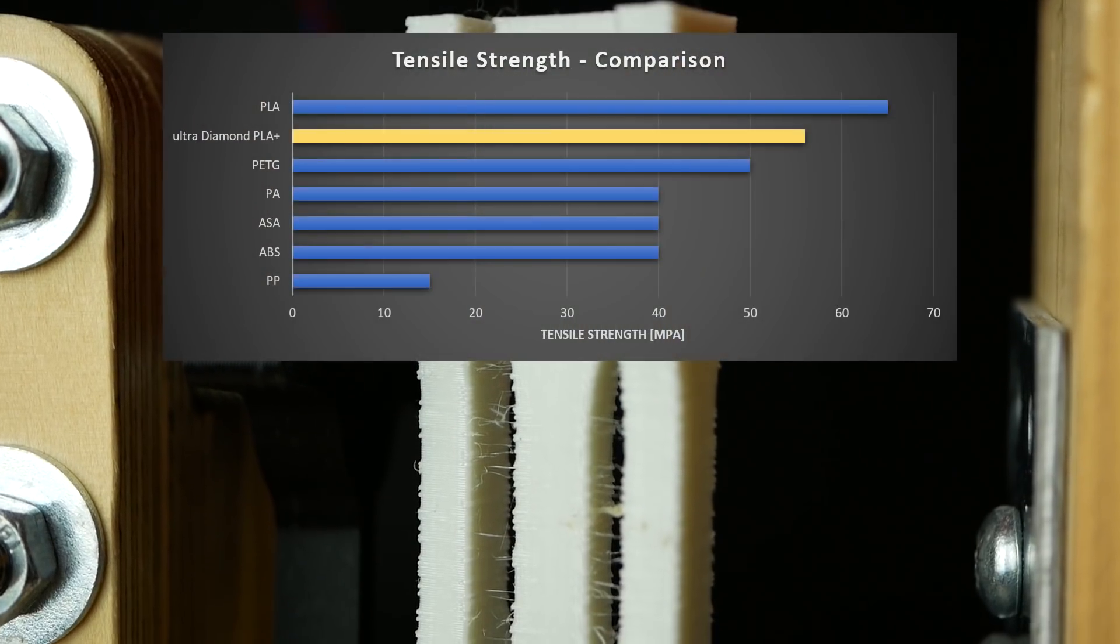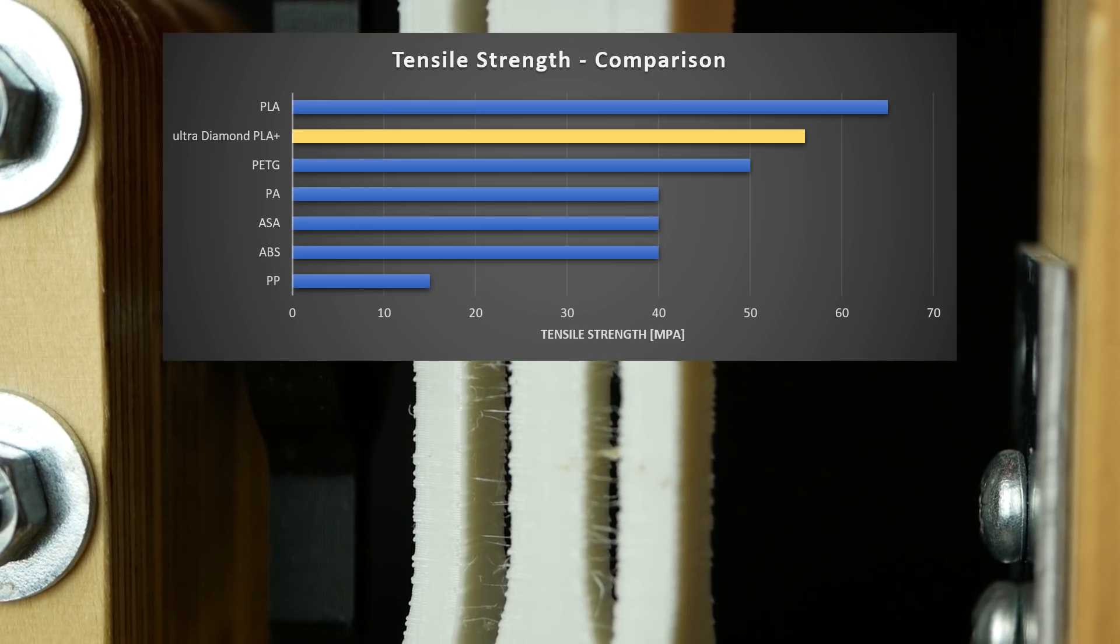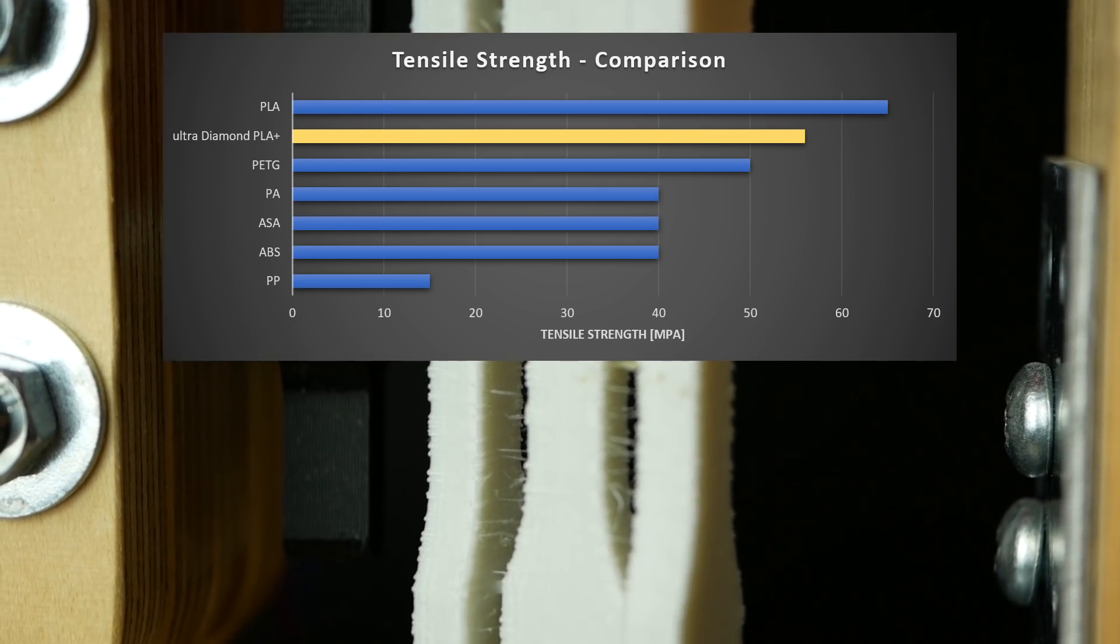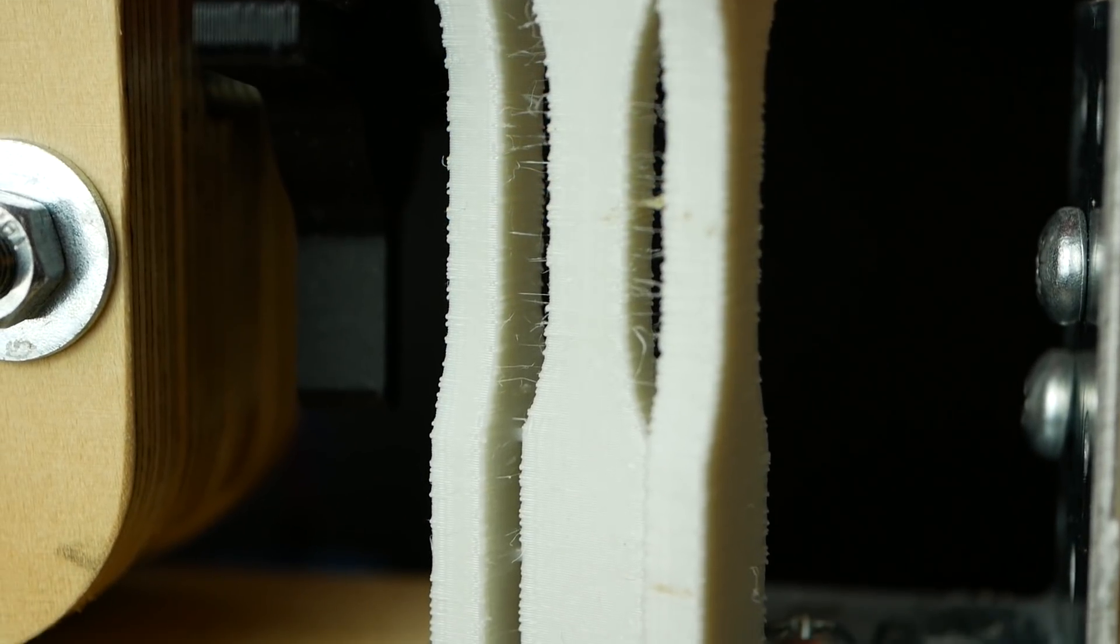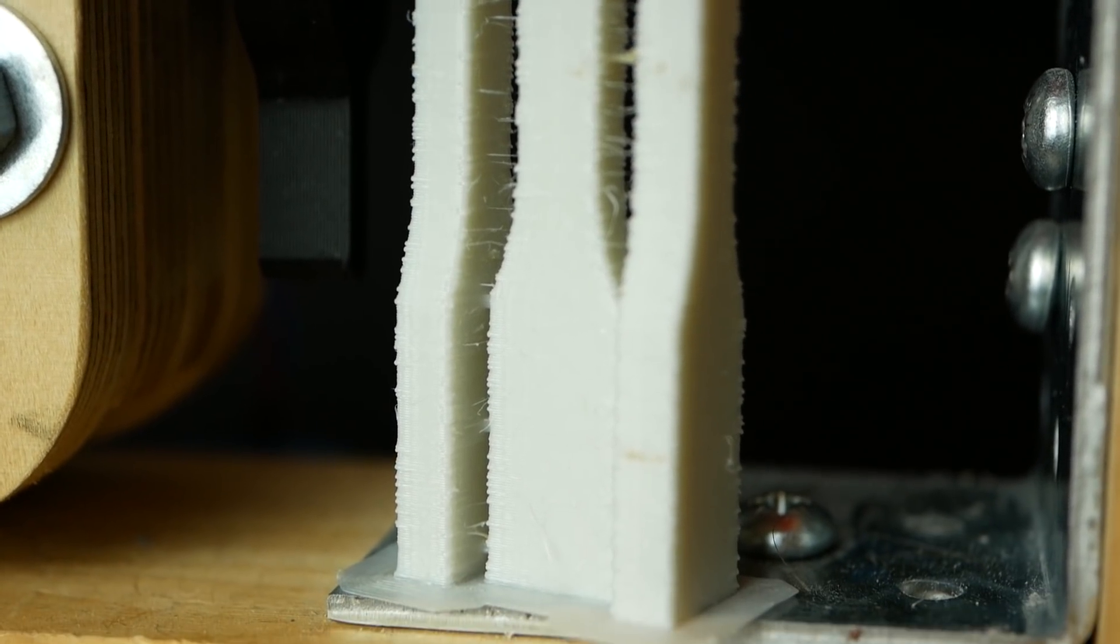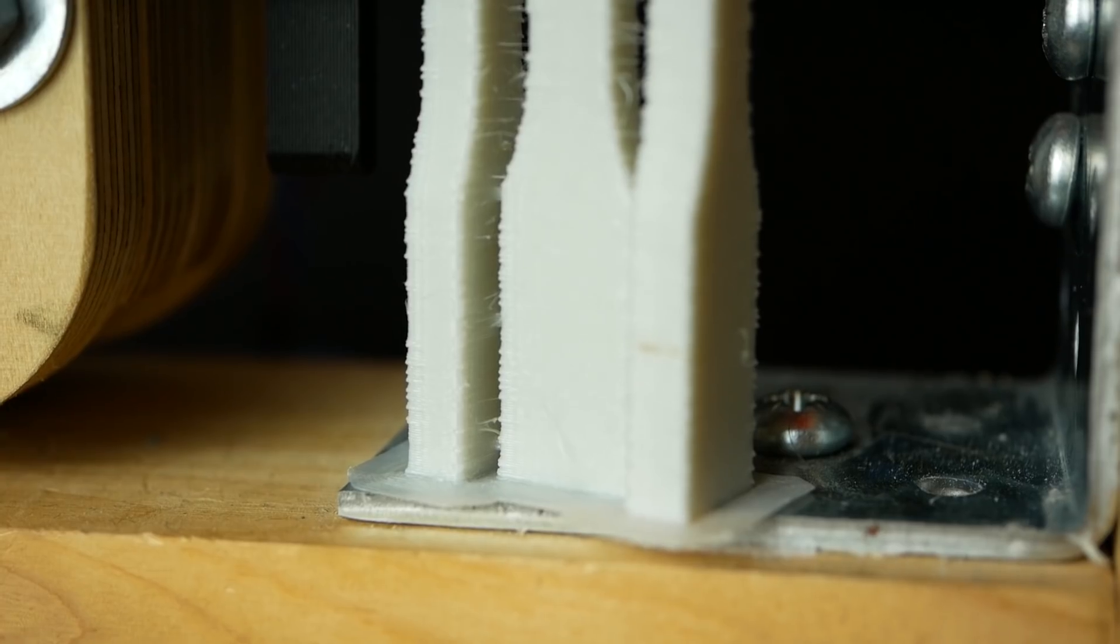Layer adhesion is the point where this material in my opinion is kind of bad because the samples that were printed in the standing orientation all failed at around 15 MPa of stress which is just a third of the normal strength.